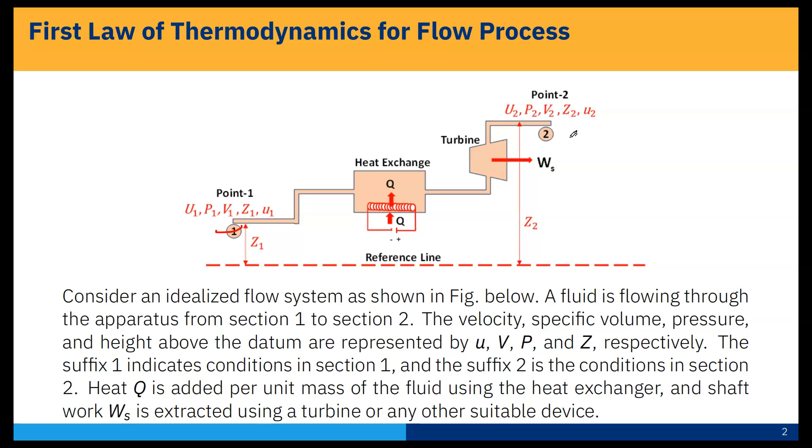The velocity, specific volume, pressure, and height above the datum are represented by u, v, p, and z respectively. The suffix 1 indicates condition in section 1 and suffix 2 is the condition in section 2.